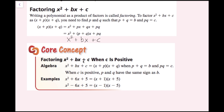When c is positive, p and q have the same sign as b. So x squared plus 6x plus 5 factors as x plus 1 times x plus 5. And then x squared minus 6x plus 5 becomes x minus 1 times x minus 5 as the two factors.